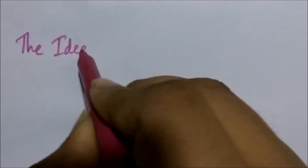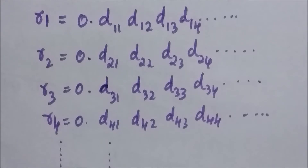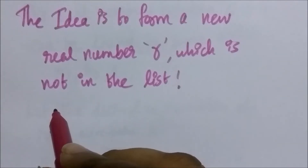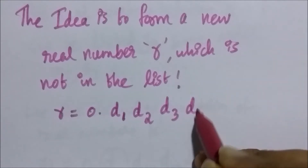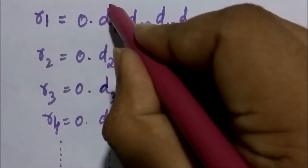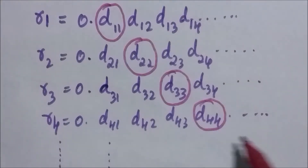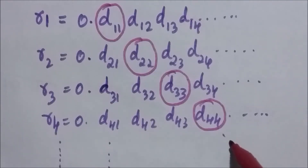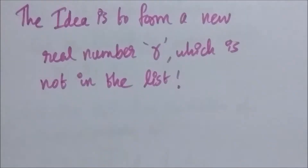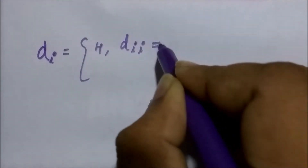Now the idea is to form a new real number R which is not in the list. We are trying to form a new real number R which is between 0 and 1 but has not been listed. This real number R is of the form 0.D1, D2, D3, D4 and so on. The aim is to form R where D1 is not the same as D11, D2 is not the same as D22, D3 is not the same as D33, D4 is not the same as D44 — these are the diagonal elements. The rule is: Di = 4 when Dii is not equal to 4, and Di = 5 when Dii equals 4.